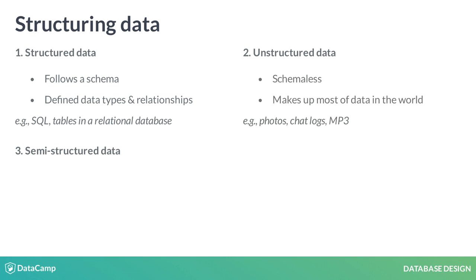The second is unstructured data, which is schemaless and data in its rawest form, meaning it's not clean. Most data in the world is unstructured. Examples include media files and raw text.